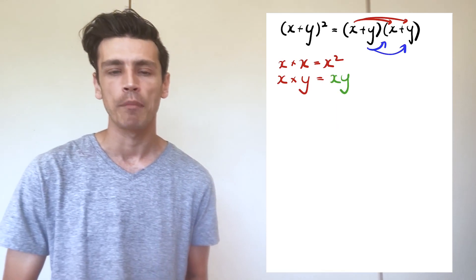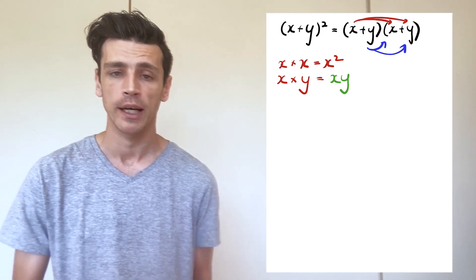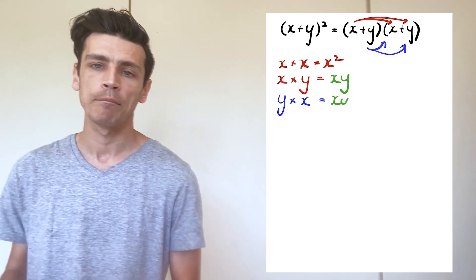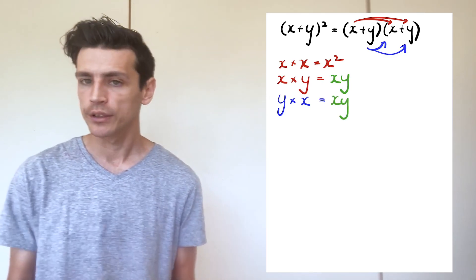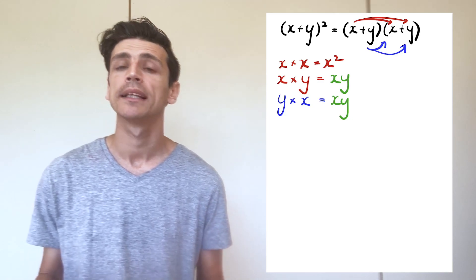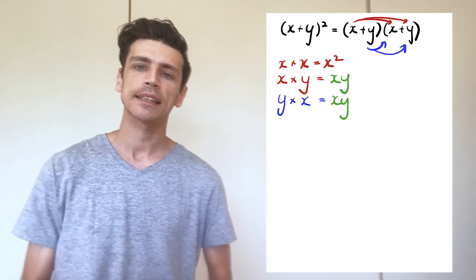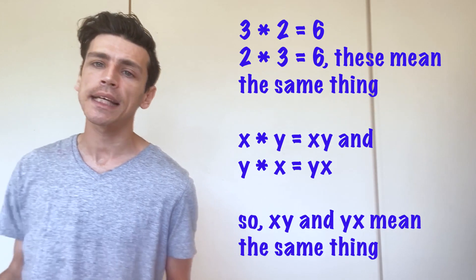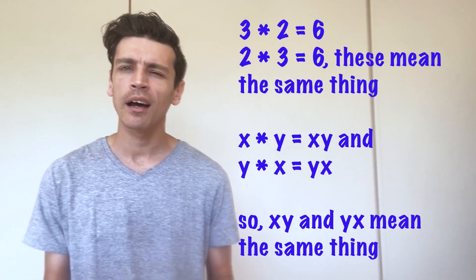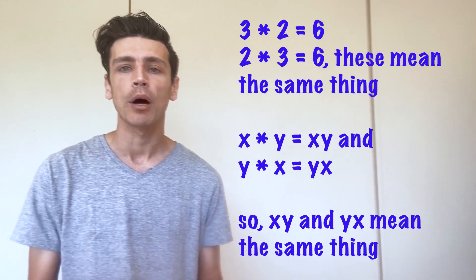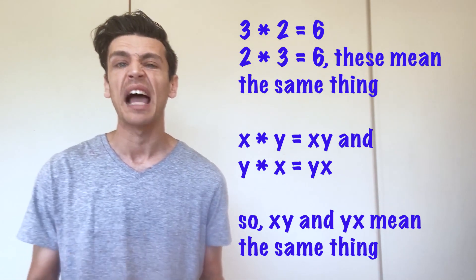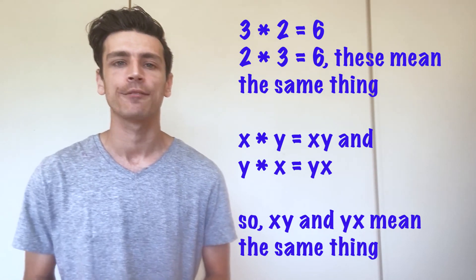So we have x multiplied by y giving us xy. Now we take our second component of our first bracket which was positive y, so y multiplied by x is again going to give us xy. The great thing about multiplication in algebra is that it doesn't matter which order I put them in, it's going to give me the same answer. A rule I do for myself is when I'm multiplying two variables together I generally try to keep them in alphabetical order, and that way it's easier to find like terms.